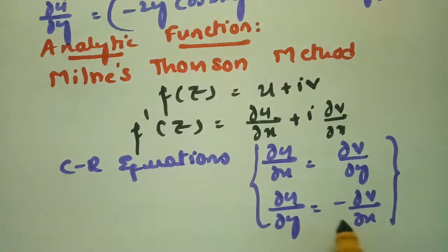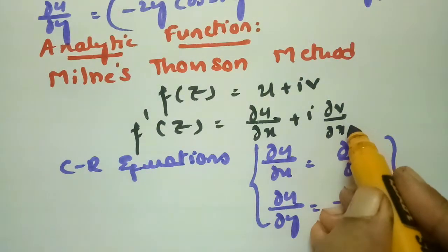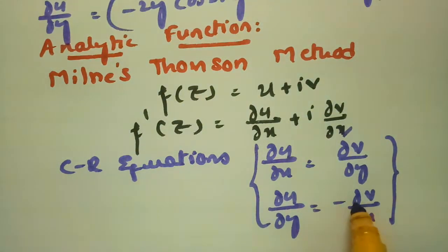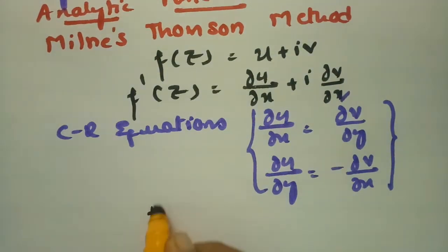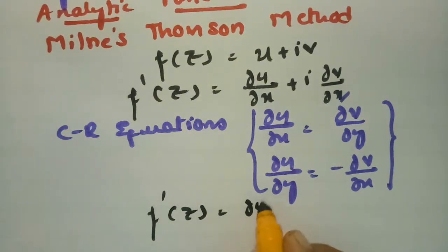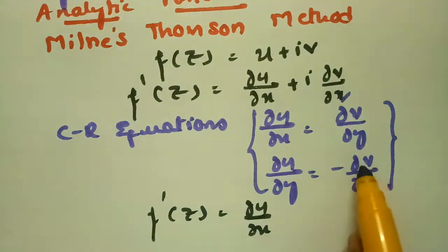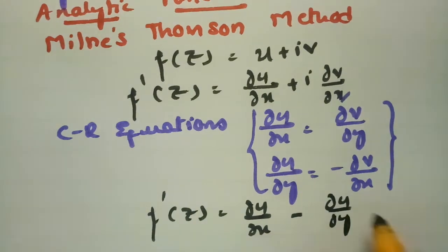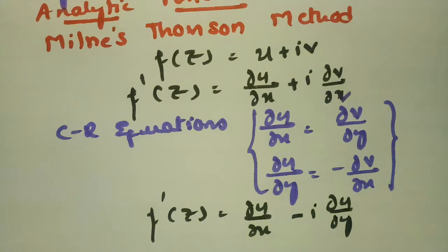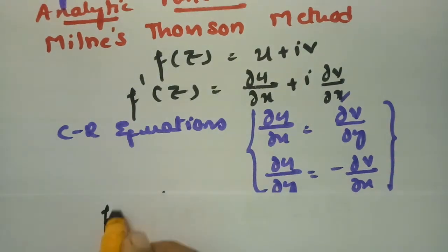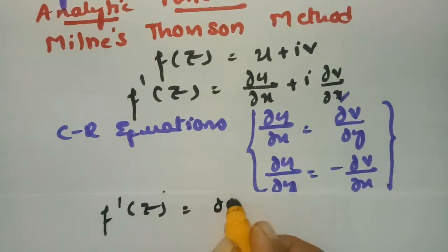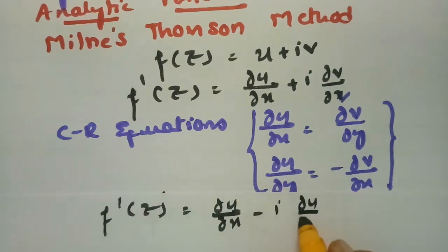Since the real part u is given, we transform v in terms of u. In place of ∂v/∂x we write minus ∂u/∂y using the CR equation. So f'(z) = ∂u/∂x + i·(−∂u/∂y), which equals ∂u/∂x minus i·∂u/∂y.